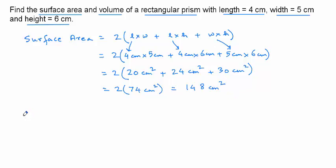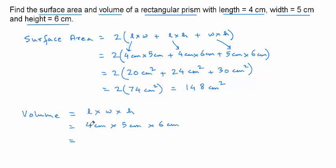And the volume formula is length times width times height, which is equal to 4cm × 5cm × 6cm. 4 times 5 is 20, and 20 times 6 is 120. And you multiply the units like you do with the numbers — centimeters times centimeters times centimeters is centimeters cubed. So the volume is 120 cm³.